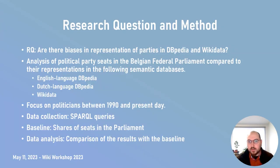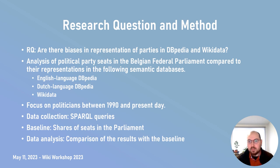To measure the rate of errors and possible biases, we compared the English-language DBpedia, the Dutch-language DBpedia, and Wikidata in terms of available data on politicians in the Belgian Federal Parliament, compared to the actual seats the parties occupy. We acquired data using SPARQL queries and compared the results with the baseline — the shares of seats or votes of parties in the Belgian Federal Parliament — determined from the most recent previous election. We then compared these numbers using data analysis and visualized our results in figures and dashboards.